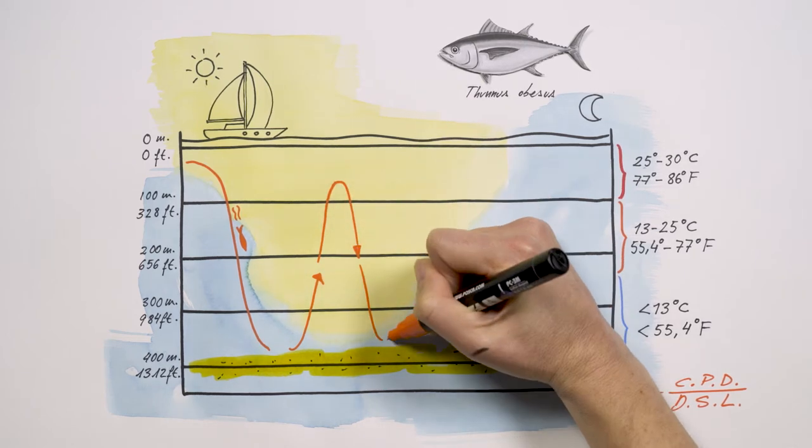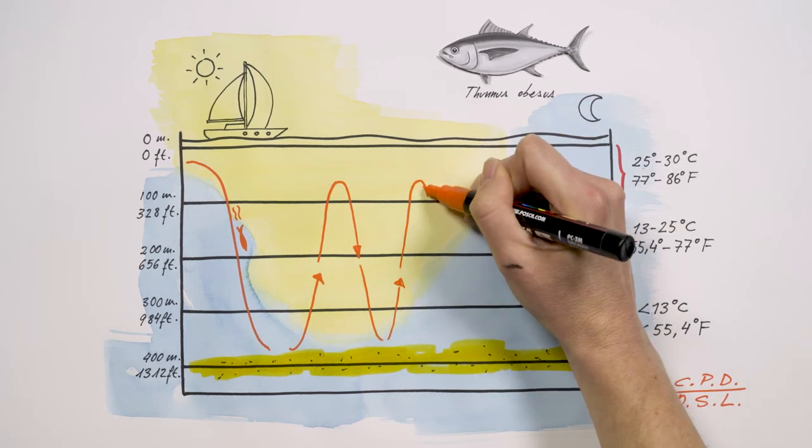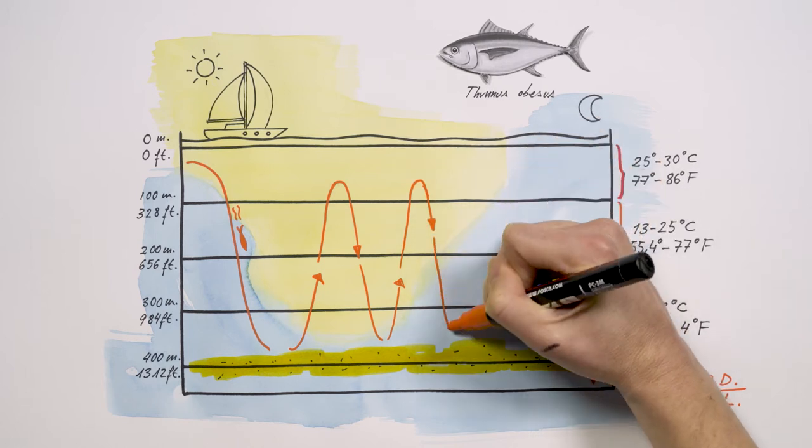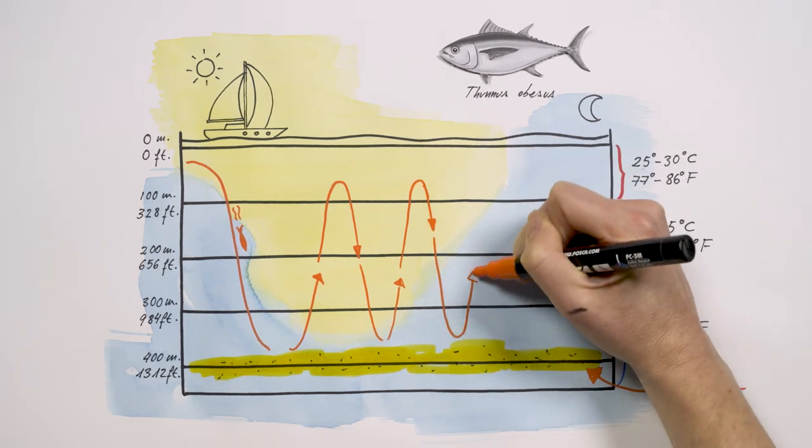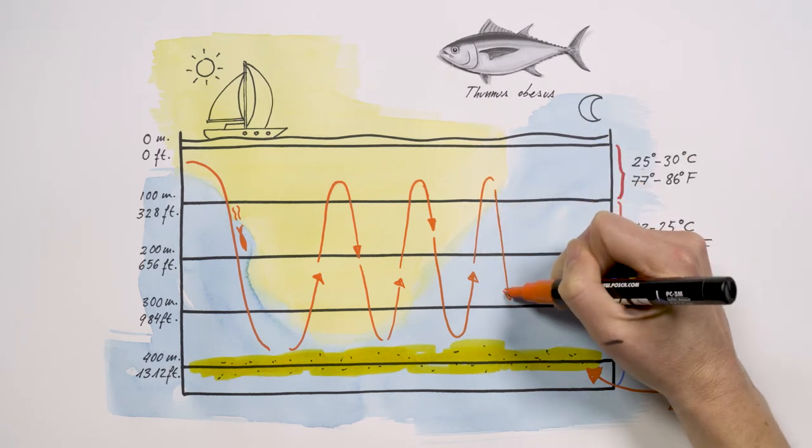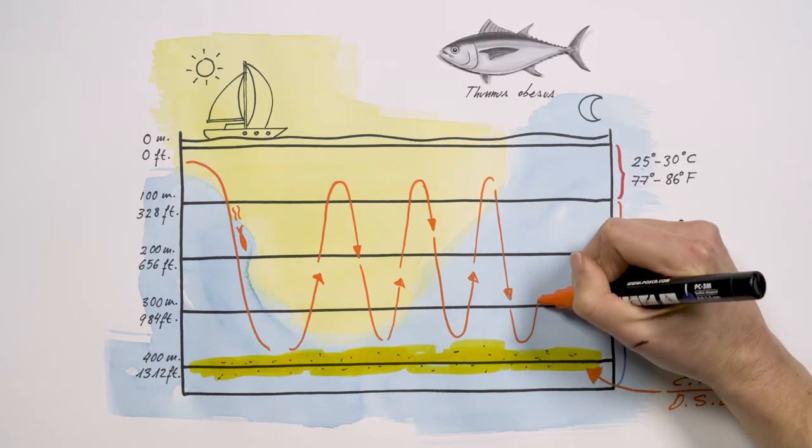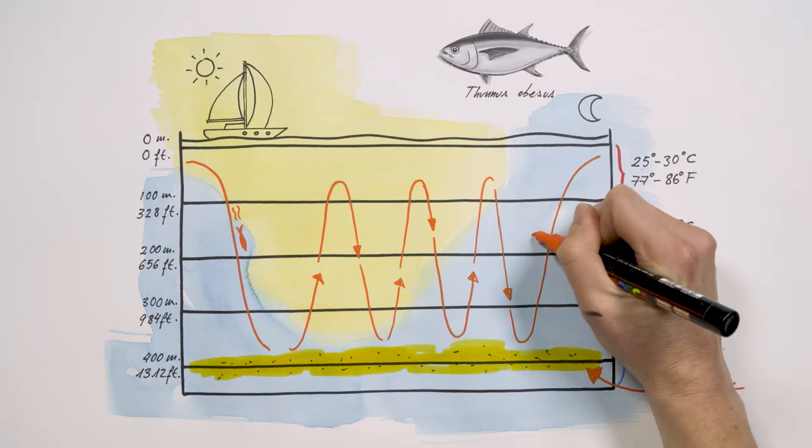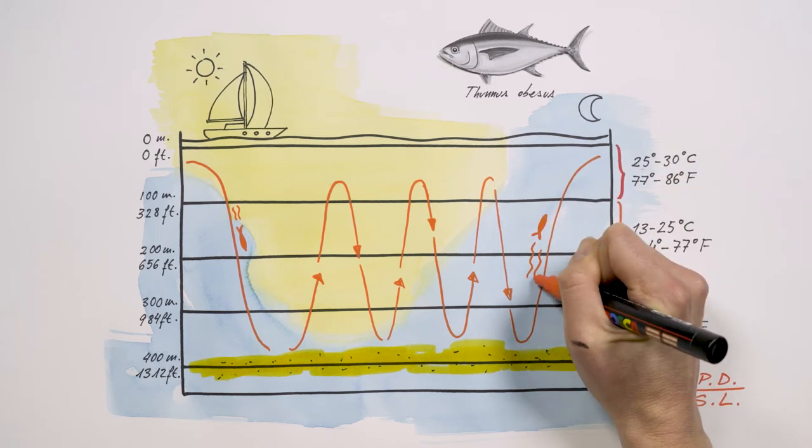At night, it spends most of its time near the surface, and at dawn it starts its routine all over again. Although this is the general pattern, there are always exceptions. There's a very interesting one in Scandinavia where it's common to see tuna feeding near the surface during the day because there are large schools of herring there. Why go down to cold waters?